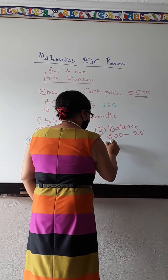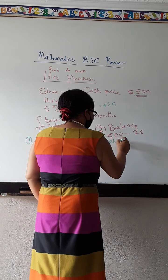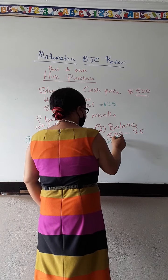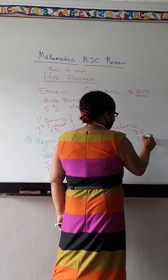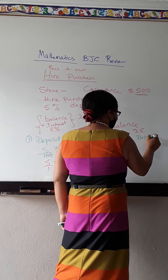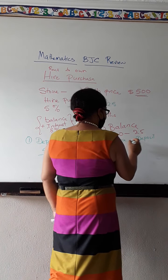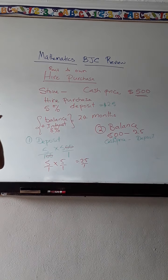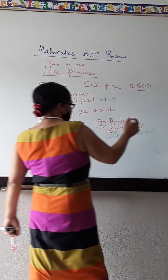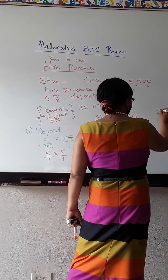Right here. This $500 is my cash price. And this $25 is the deposit that I put in. So it's $500 minus $25. And that is going to leave me with $475.